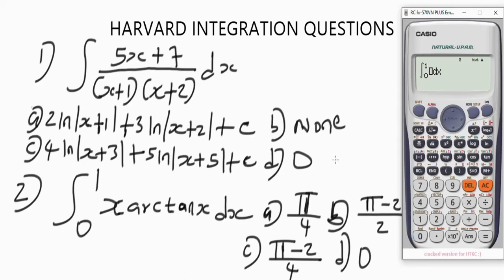Now input the function. We have X — that's Alpha X. For arctan X: there's no arctan button on this calculator, but arctan is the same as tan inverse of X. So to input it, press Shift, then Tan, then Alpha X, then close the brackets. Now we're good to go — let's press equals.